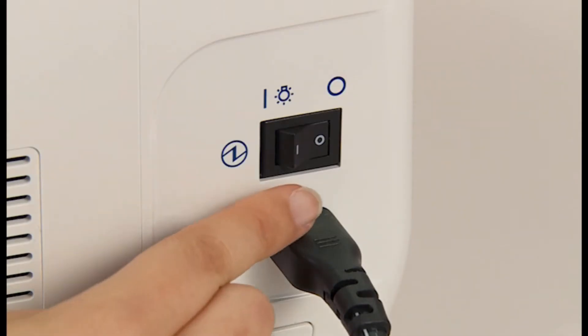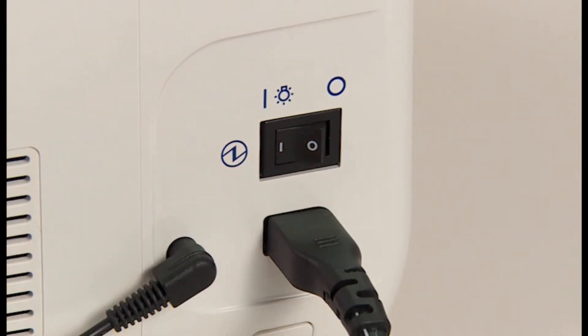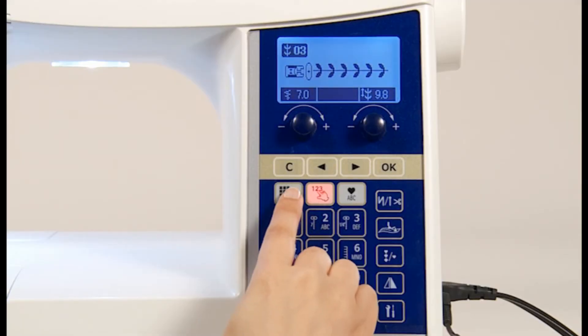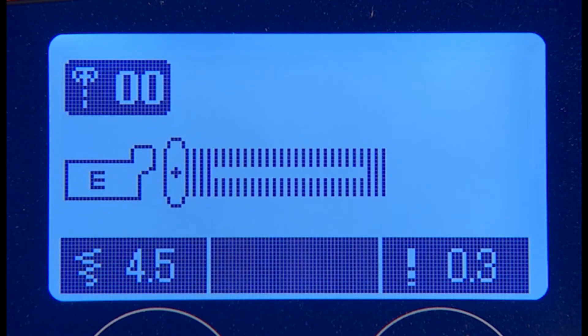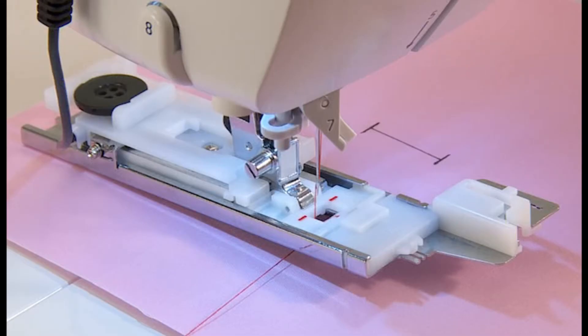Turn on the power switch. Select this stitch pattern. Raise the presser foot. Pass the needle thread through the hole on the presser foot and pull it out sideways.